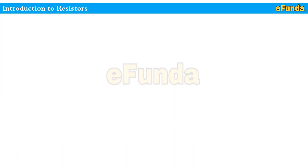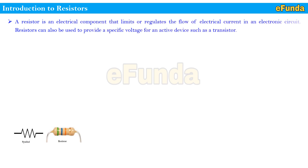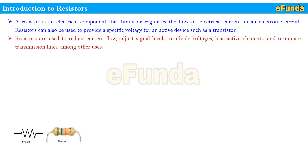Introduction to resistors. A resistor is an electrical component that limits or regulates the flow of electrical current in an electronic circuit. Resistors can also be used to provide a specific voltage for active devices such as a transistor. In electronic circuits, resistors are used to reduce current flow, adjust signal levels, divide voltages, bias active elements, and terminate transmission lines, among other uses.